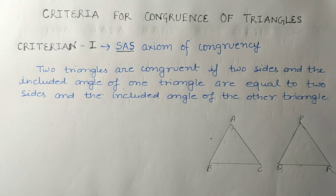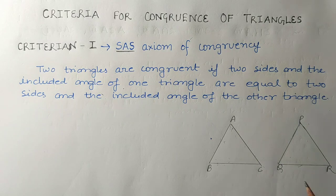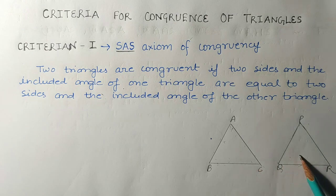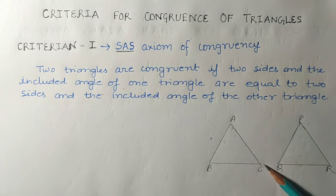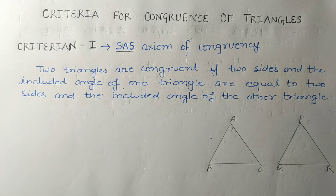Whenever we want to show that one triangle is congruent to another, it would be difficult to show all six components of the first triangle are equal to all six components of the other triangle.